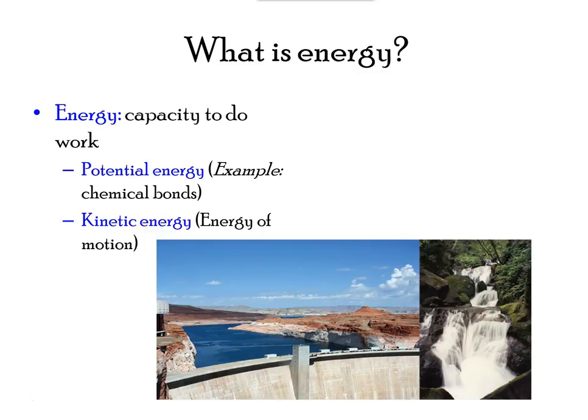In physics, energy refers to the study of energy and energy transfer involving physical matter. The matter relevant to a particular case of energy transfer is called a system, and everything outside of that matter is called the surroundings. When heating a pot of water on the stove, the system includes the stove, the pot, and the water. Energy is transferred within the system between the stove, pot, and water.